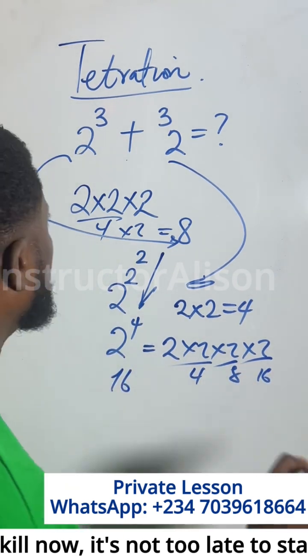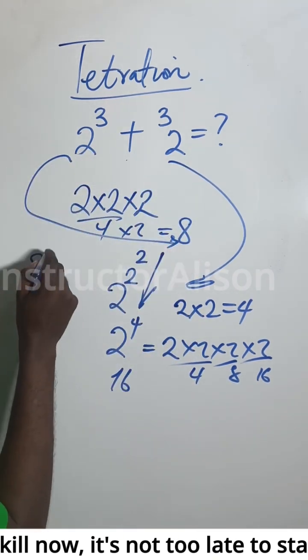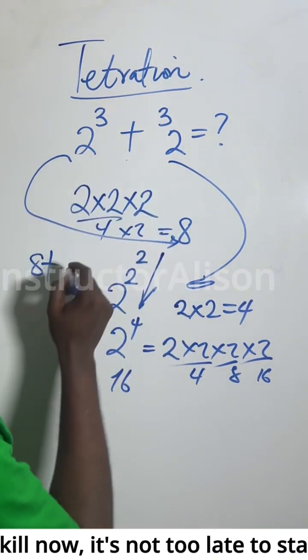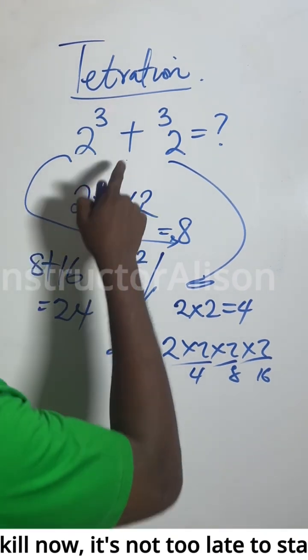So the final result is this plus this. The result of this is 8, plus this one is 16. 8 plus 16, that gives us 24. That is the result for this.